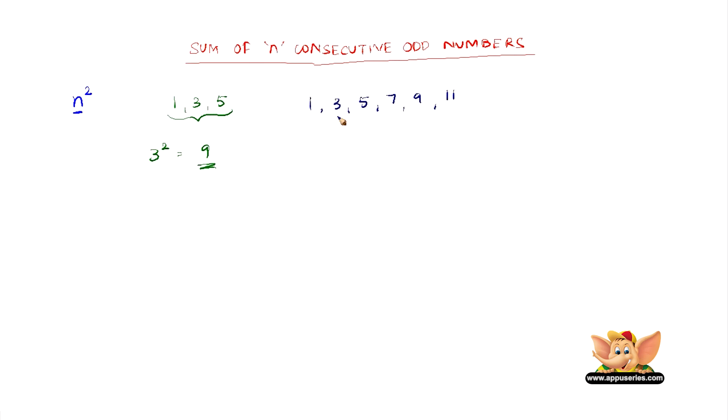All we have to do is count the number of numbers here, that is 1, 3, 5, 7, 9, 11, which counts up to 6. So all we have to do is square 6, we get 36. So 36 is the sum of 1, 3, 5, 7, 9, and 11, which is very simple.